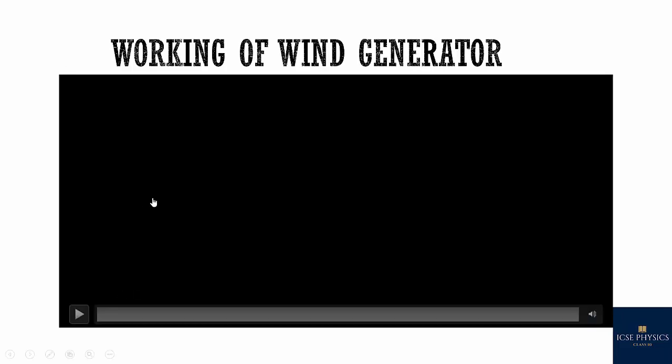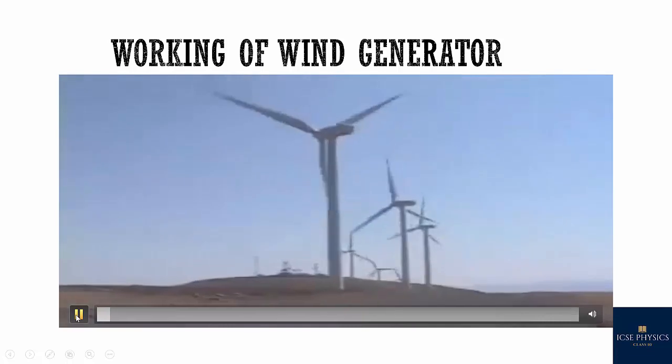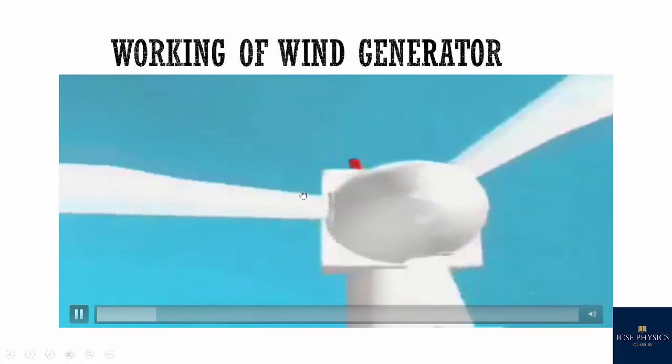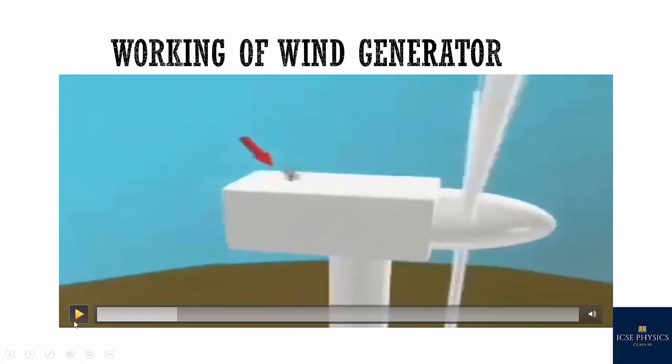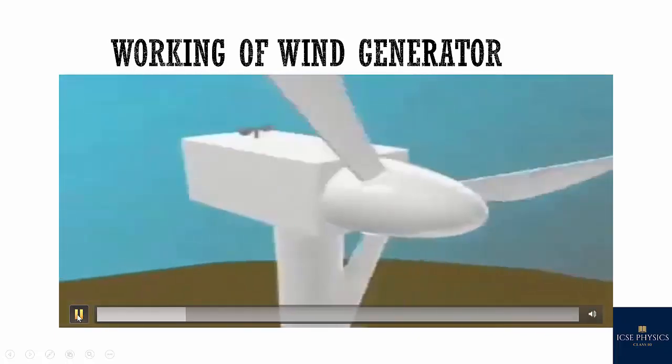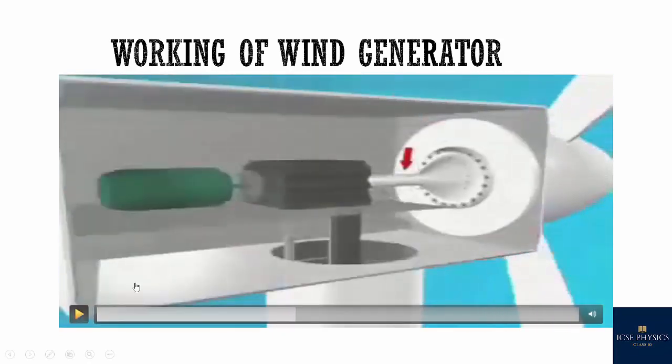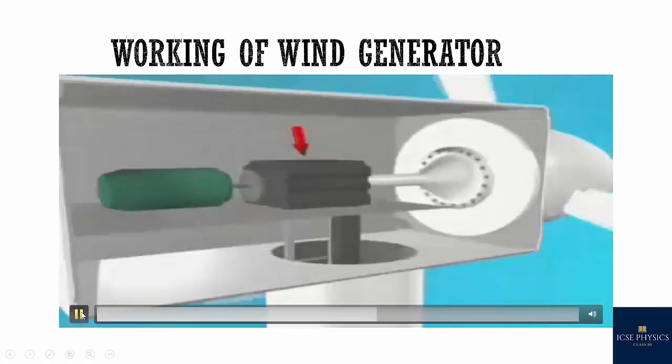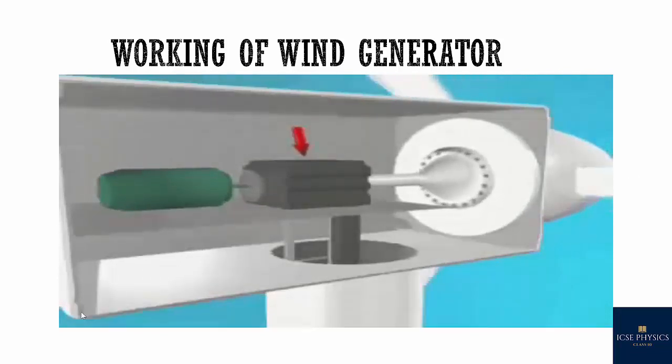Now let's see how does the wind generator work. On the top of each turbine is a box which is known as nacelle. And above it there is a small rotating device which gives us the direction and speed of the wind. Inside the box we can find the shaft which is attached to the blades. Then this shaft connects the generator and the wind turbine blades. This is an electric generator.